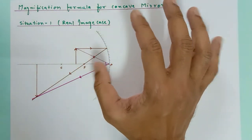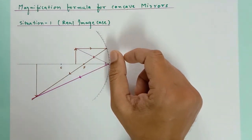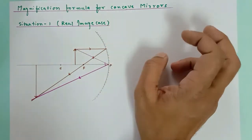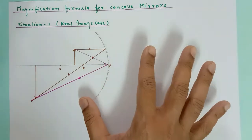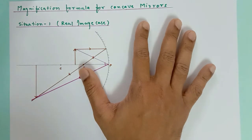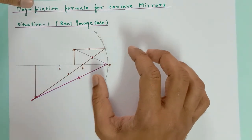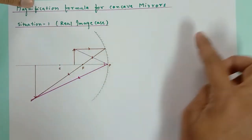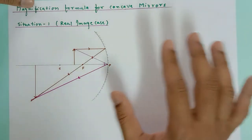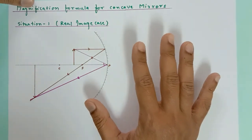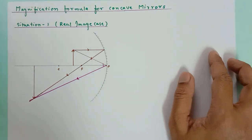Most people have confusion over here, so I will very easily clear up your confusion. I'll be taking up two situations: one for the real image and one for the virtual image, and we will derive the magnification formula for both, and then proceed with the magnification formula for convex mirror. If you take a real image case, a virtual image case, or a case of a concave or convex mirror, your answer for magnification is going to be the same. The magnification formula is independent of the type of mirror and independent of the nature of the image.